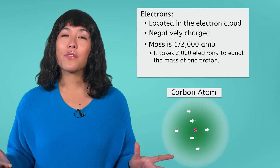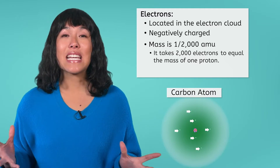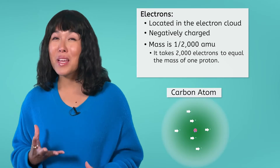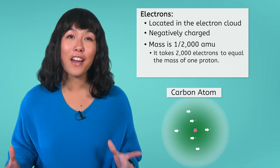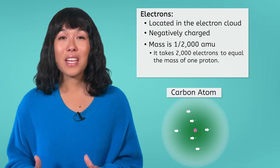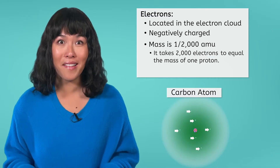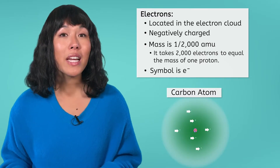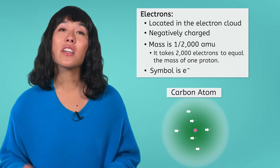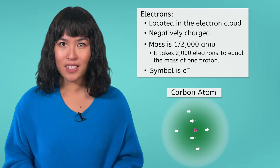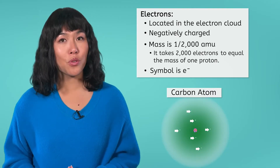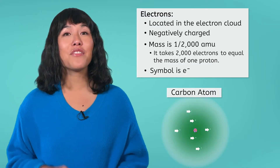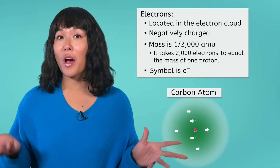Think of a grain of sand being added to a bowling ball — the grain of sand doesn't meaningfully affect the mass of the bowling ball because it is so small. The symbol of an electron is a lowercase e with a little negative sign on the top right. Similar to neutrons, atoms of the same element can have different numbers of electrons.